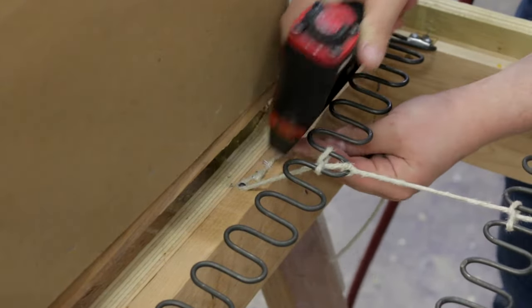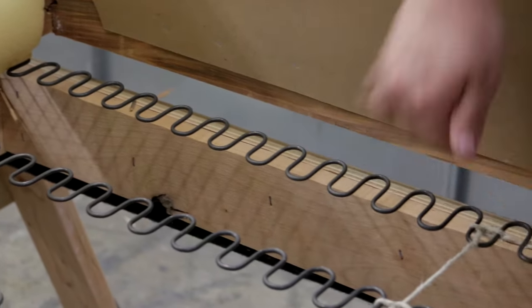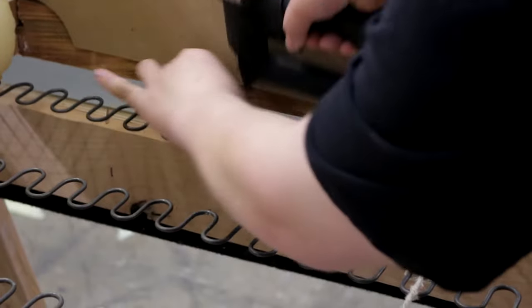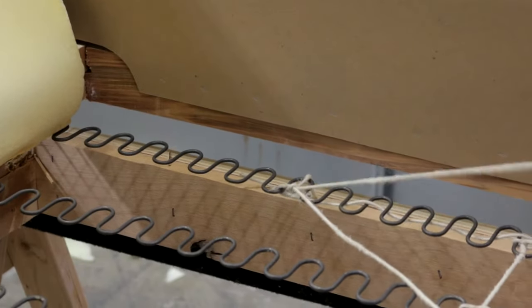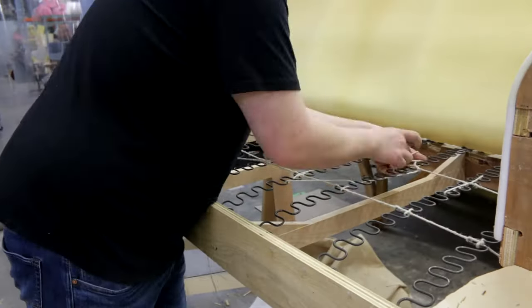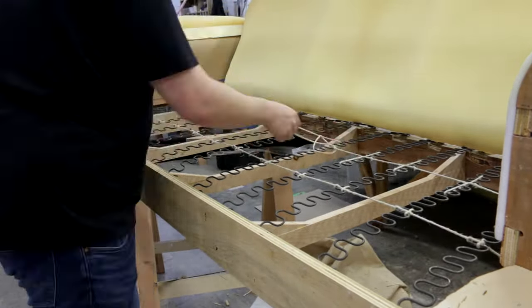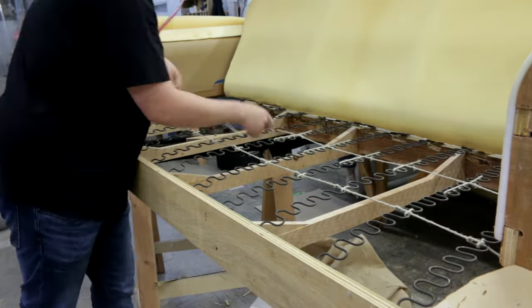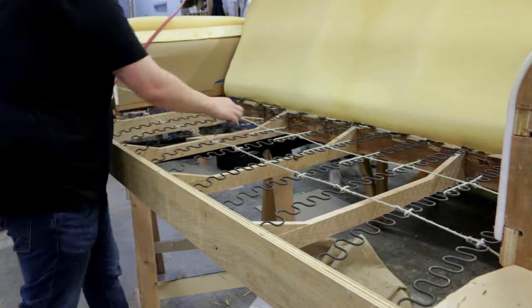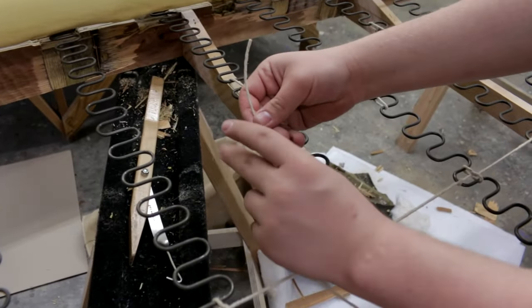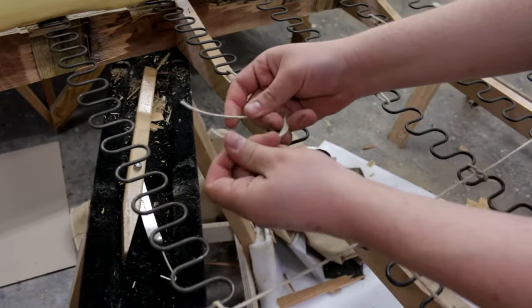On our next string, we'll tie it on the same side about a hand's length away from where we ended. On our second string, I tied the same knots but with wider loops to engage more springs. If you run out of twine before you finish, just tie a square knot in the center with a second piece and keep going.